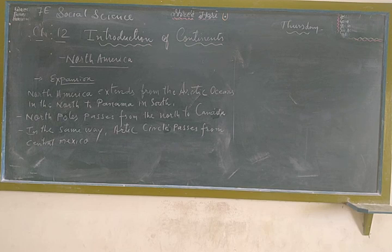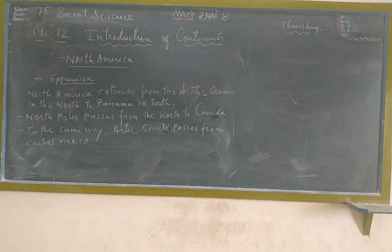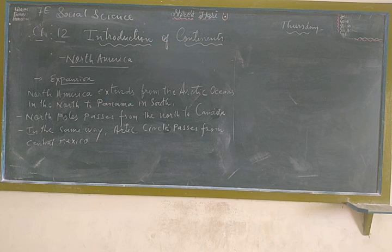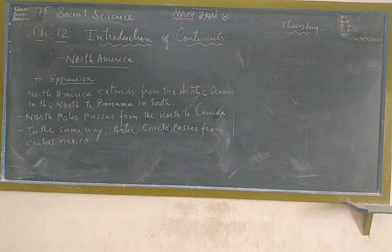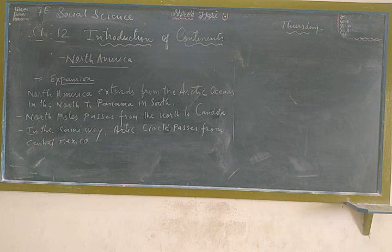North America spreads over 2.44 lakh square kilometers, covering almost 16% of the land area of the world. The natives of this land are known as Red Indians. The new culture of America has developed because of external contact and outside impact.